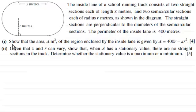Now for the first part, you've got to show that the area A square meters of the region enclosed by the inside lane is given by A equals 400r minus πr², for four marks. Now it's this first part that I'm going to do in this video. For the second part, just have a look at the video that follows.